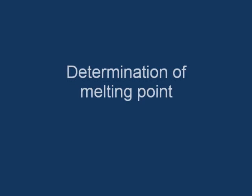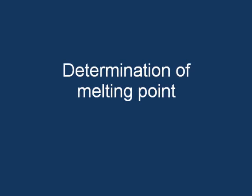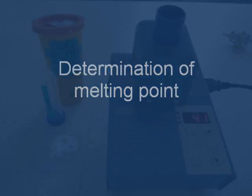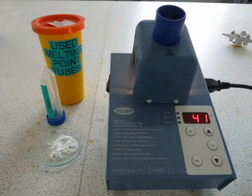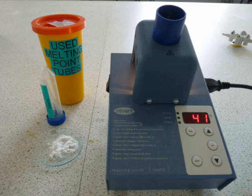Determination of a melting point is used as an identification tool of a synthesized compound. Pure compounds have a sharp melting point characteristic of that compound. Impurities may cause the melting point to be lowered, and the compound may melt gradually over a larger temperature range.